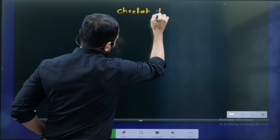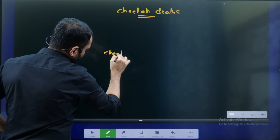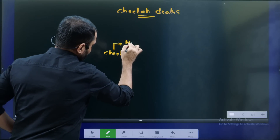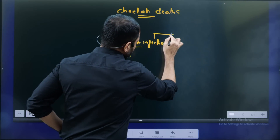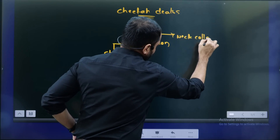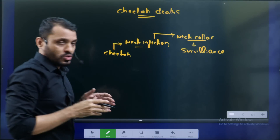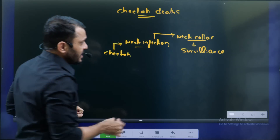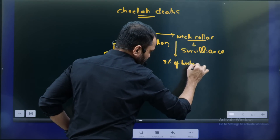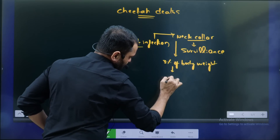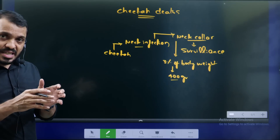Cheetah deaths is our main topic. One key issue is neck infection. The neck collar is a type of surveillance to track where they are. Normal global standards state the neck collar weight should be 3% of body weight. For a static Cheetah, the collar is 400 grams.